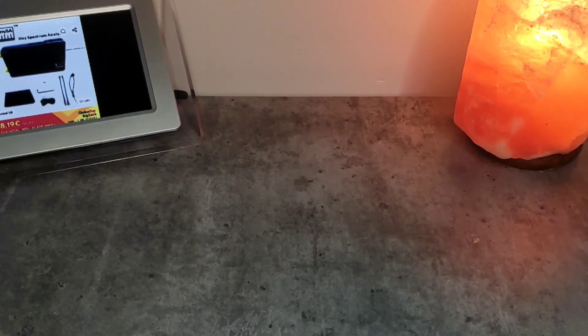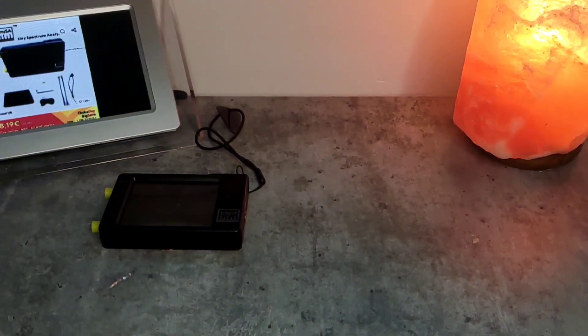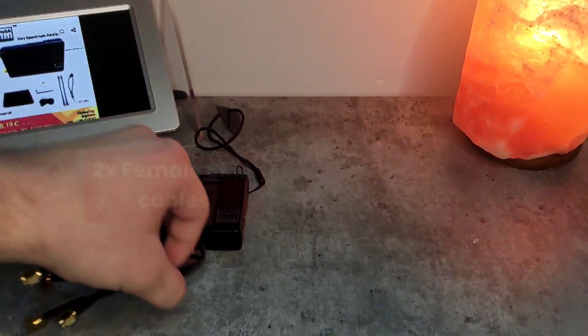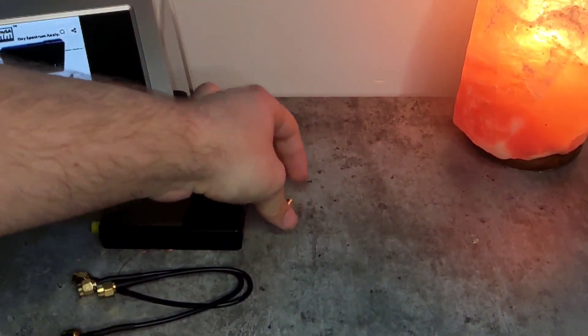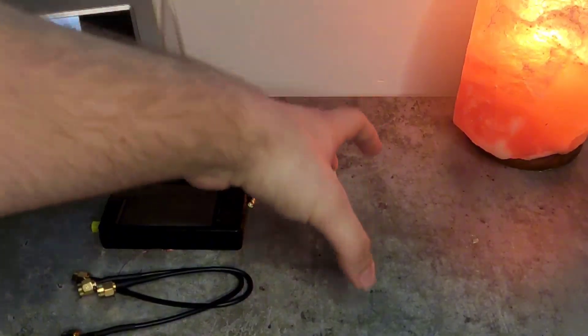In the package you will receive the TinySA, 2 female SMA connectors, a male adapter, and an antenna.